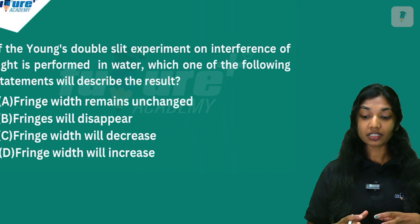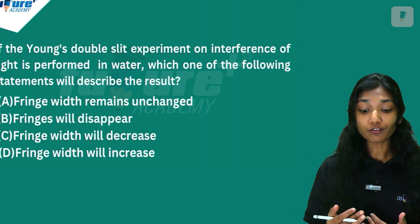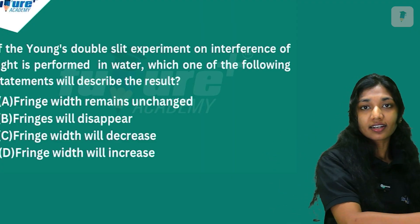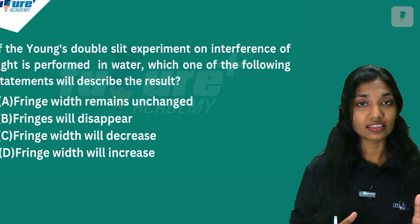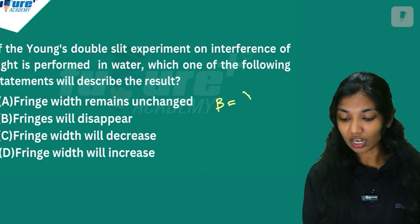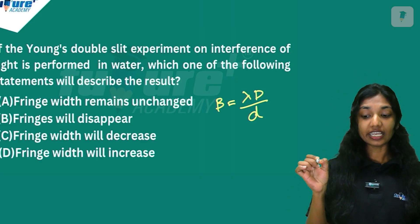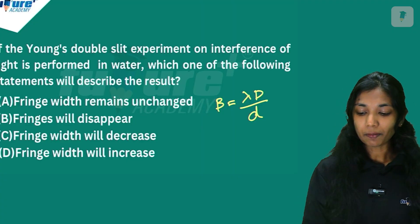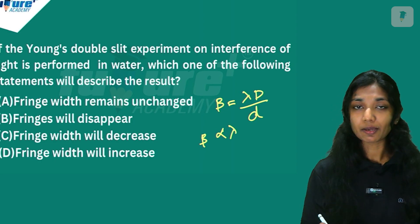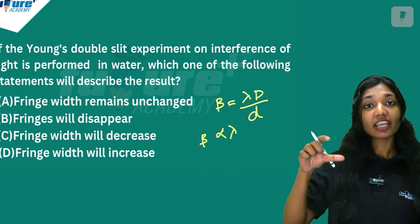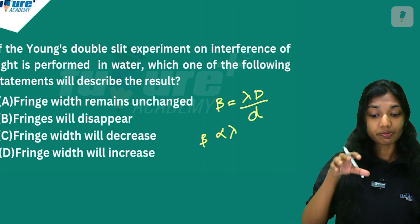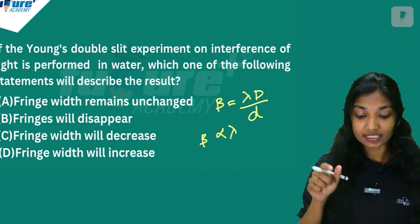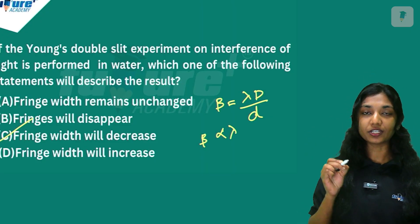Next question: If Young's double slit experiment on interference of light is performed in water, which statement describes the result? Using the equation beta = lambda * D / d, fringe width is proportional to wavelength. When the experiment is done in water, the wavelength of light decreases, so the fringe width decreases.